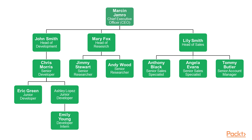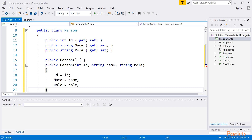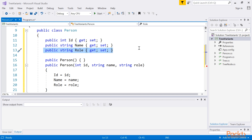Within each department there can be another structure, such as in the case of the development team. John Smith is head of development. He is a boss for Chris Morris, who is a manager for two junior developers, Eric Green and Ashley Lopez. Ashley is also a supervisor of Emily Young, who is a developer intern. An example tree is shown in the following diagram. As you can see, each node should store more information than just an integer value — there should be an identifier, a name, and a role. Such data are stored as values of properties in an instance of the Person class.